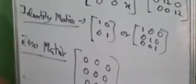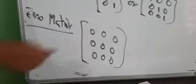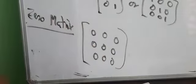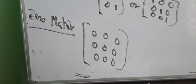Next, Zero Matrix. As the name suggests, all the elements should be 0 in case of a zero matrix.